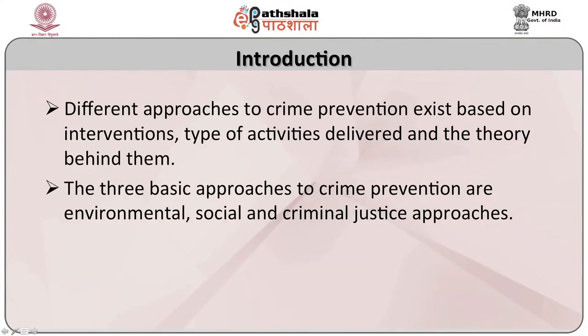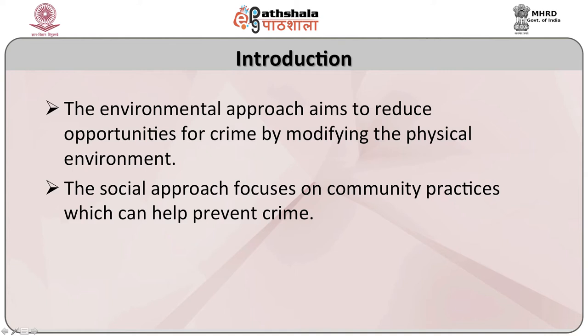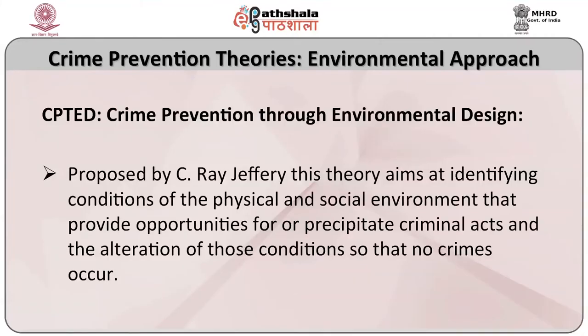The three basic approaches to crime prevention are environmental, social, and criminal justice approaches. The environmental approach aims to reduce opportunities for crime by modifying the physical environment. The social approach focuses on community practices which can help prevent crime. The criminal justice approach seeks to prevent crime through the police, courts, and corrections. Most of the theories on crime prevention follow the environmental approach.